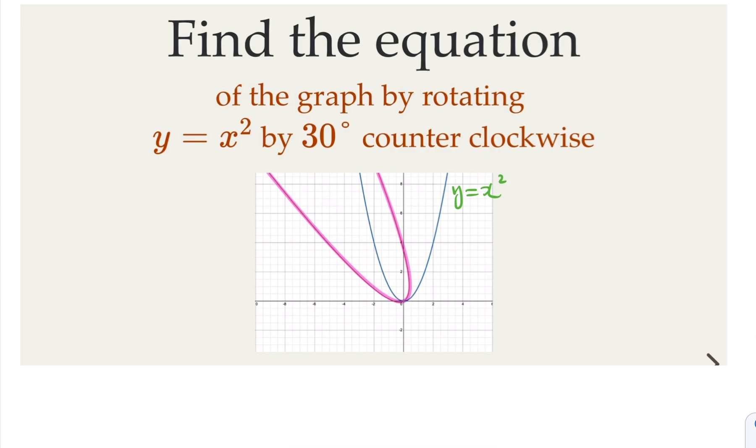We rotate the standard y equals x squared by 30 degrees counterclockwise, result in this pink graph. We try to find the equation for it. There are multiple ways of doing this. Today we're going to use complex number.